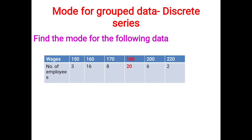Here the most occurring frequency is 20. Wages is the X value and number of employees is the F value. Since 20 is the highest frequency, most employees are getting wages of 180 rupees. So the corresponding X value, 180, is your mode. Z equals 180.